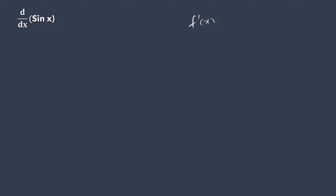If f(x) is a function of x, its derivative f'(x) is given by: limit h goes to 0, f of x plus h, minus f(x), and the whole divided by h.